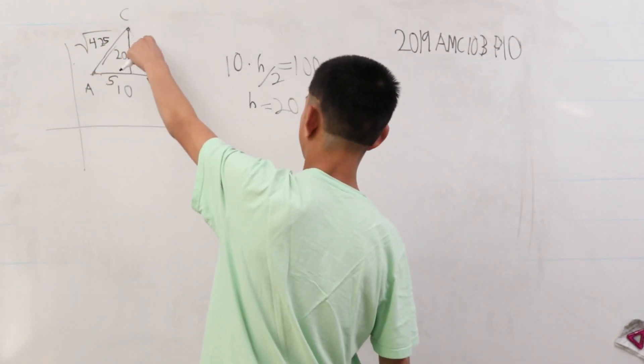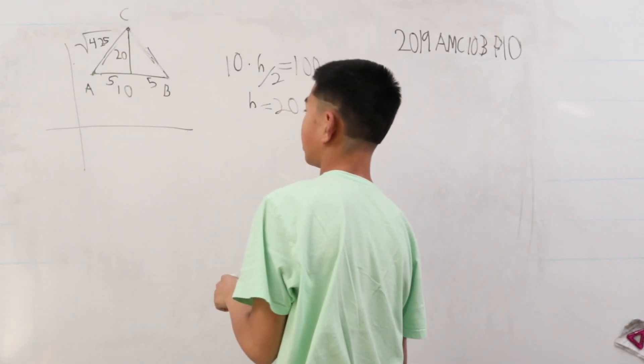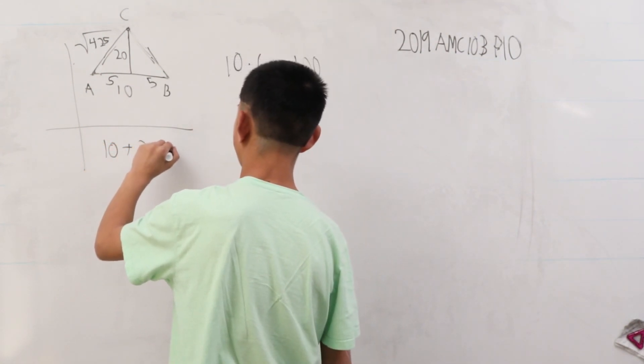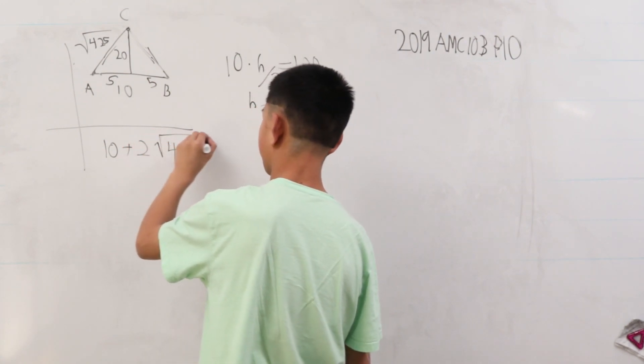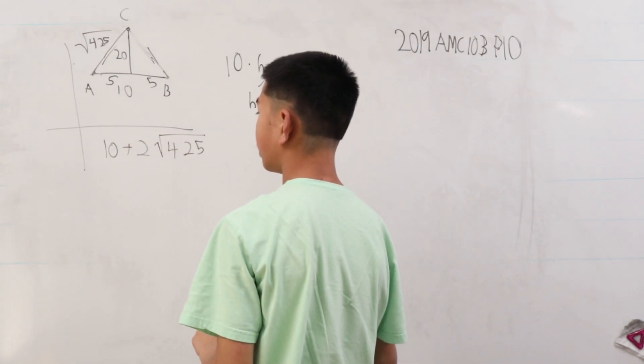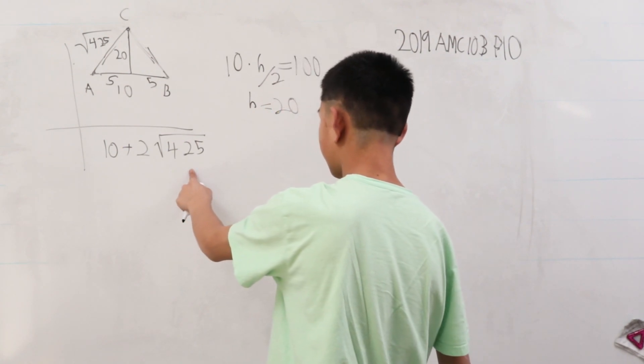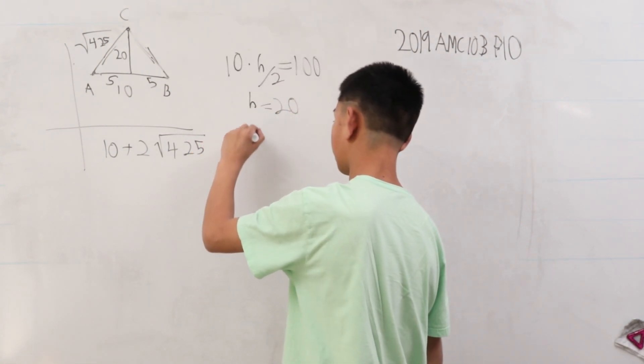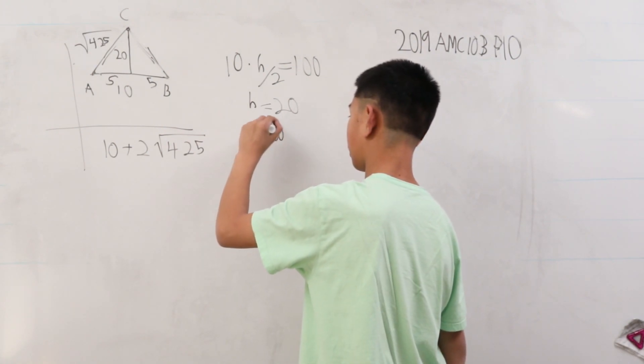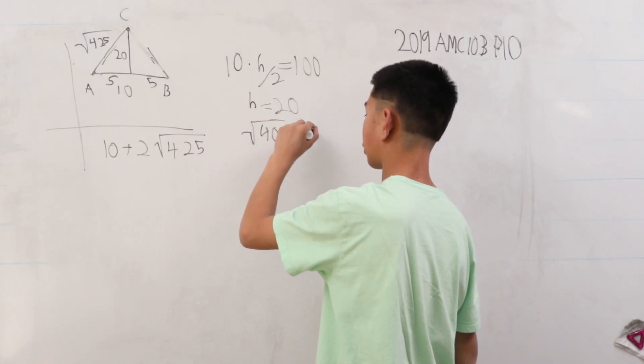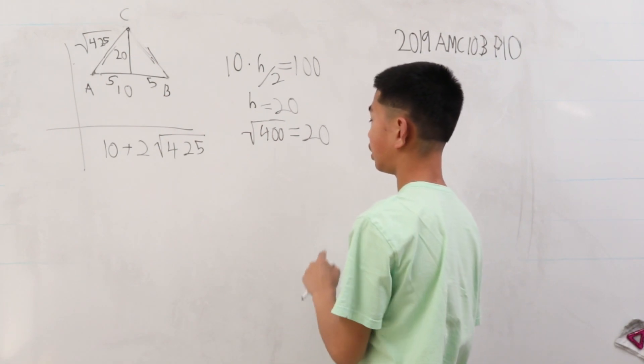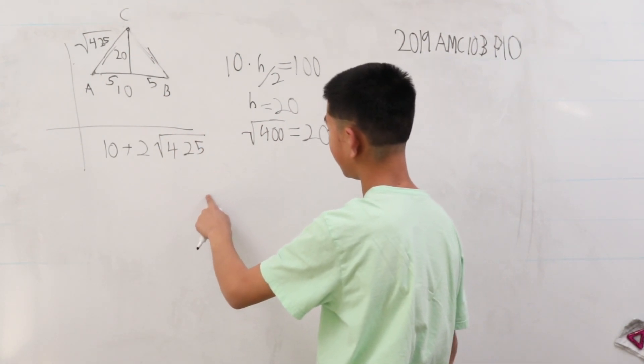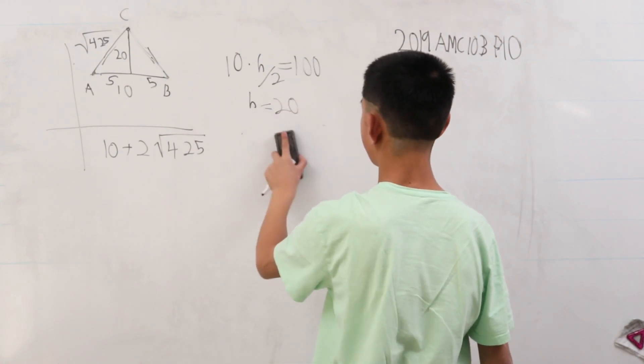Again, this does not even seem right because this is 10 plus 2 times 425, the square root of 425. This is going to be actually over it because we know that the square root of 400 is equal to 20. So this is greater than 2 times 20. If it was 2 times 20, that would be 50. So this doesn't work either.